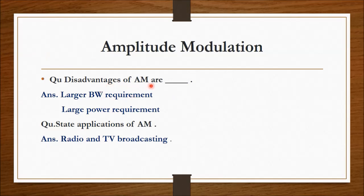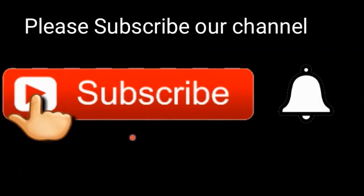What are the disadvantages of amplitude modulation? The disadvantages are larger bandwidth requirement and large power requirement. These are the two major disadvantages. The application of AM is that it is used in radio and TV broadcasting. These are the questions that should be asked in the practical examination.